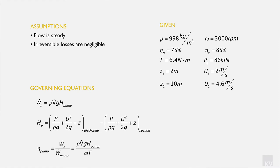From the question and reference tables we extract our known values. The fluid is operating around 24 degrees Celsius, giving a density of 998 kg/m³. The rotational speed is 3,000 revs per minute. We have pump efficiency, motor efficiency, the torque applied to the impeller, the inlet pressure, the difference in elevations between inlet and outlet, and the velocities at the inlet and outlet.